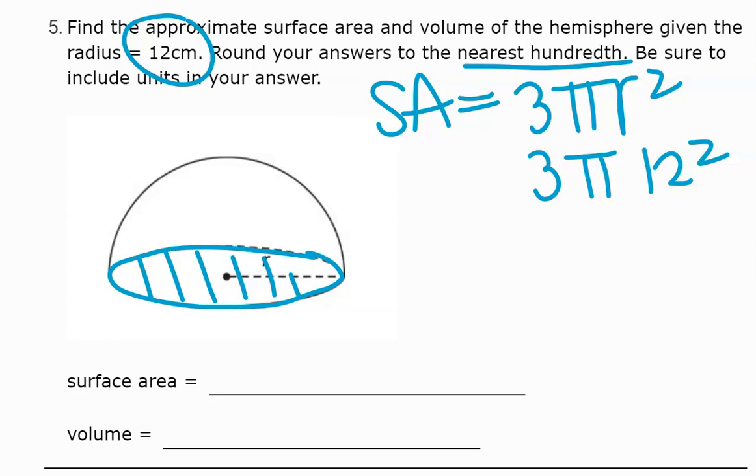I'm going to get this as a decimal because it wants to round to the nearest hundredth. 1,357.168, so that becomes 1,357.17 centimeters squared.